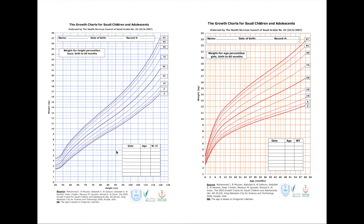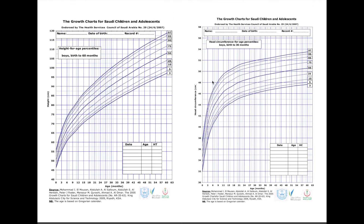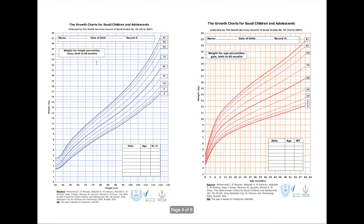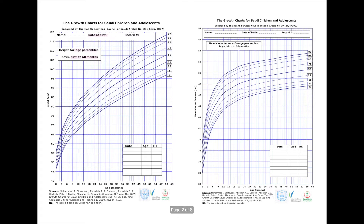The fourth thing to check is the age range — as you can see, this one goes from birth to 60 months, and this one from birth to 36 months. So you should check: is it for a boy or girl, what is the age range, what is it measuring, and the nationality or region of the growth chart — these are the four things to check first.